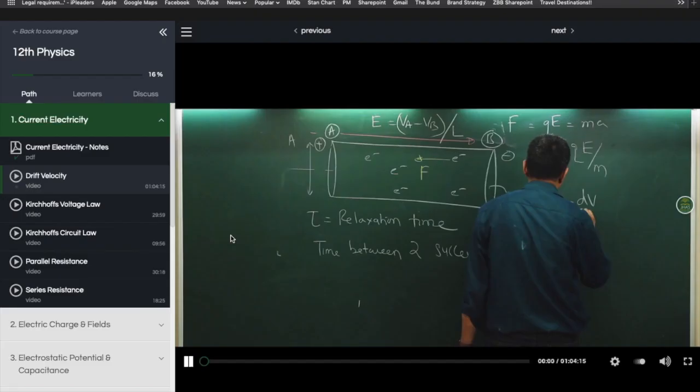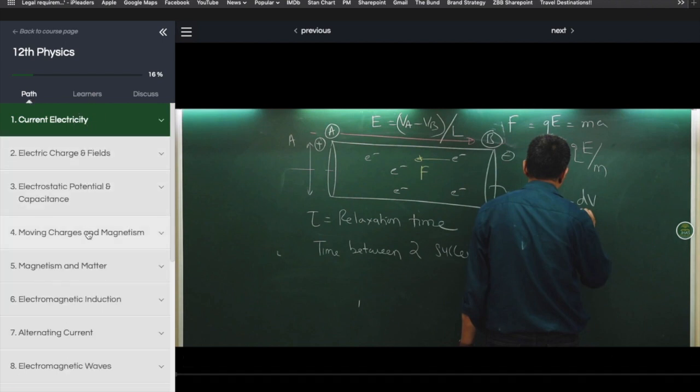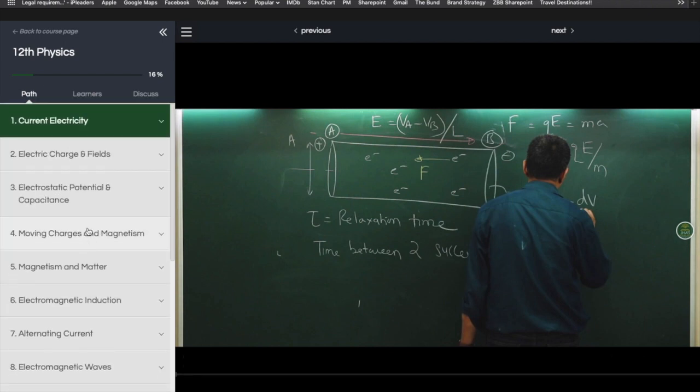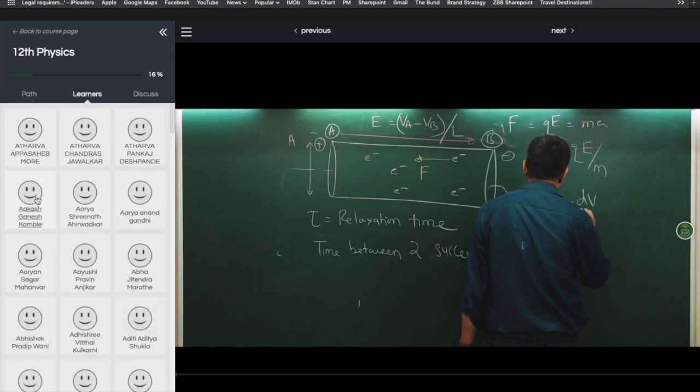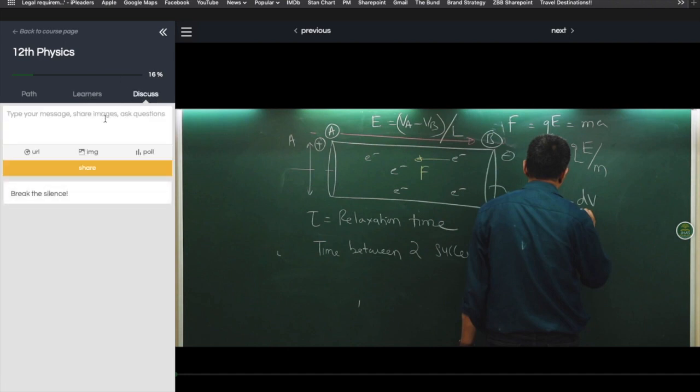Once you are in the content consumption view this is what it should look like. You will see three subtopics up here. Your path that gives you access to all of the topics that you will be covering. You have learners that gives you an overview of all of the students that are part of this course with you and it gives you a discuss tab that allows you to put your questions or share any feedback that you may have on the topic in question.